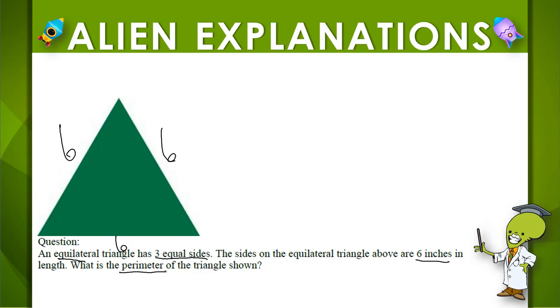And if we are trying to find the perimeter, remember perimeter is the distance all the way around a shape. So if you were traveling or walking around the shape, we would go six inches, six inches, and six inches. So to find that total distance, we just need to add those three sixes together.